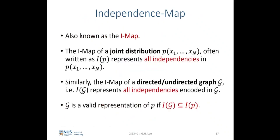The independence map is also known as the IMAP. Given a joint distribution, which we denote as p(x1, ..., xn), we write the IMAP as i(p), where p represents the joint distribution. This represents all the independencies in the joint probability distribution — encoding or representing all the independencies found in distribution p.